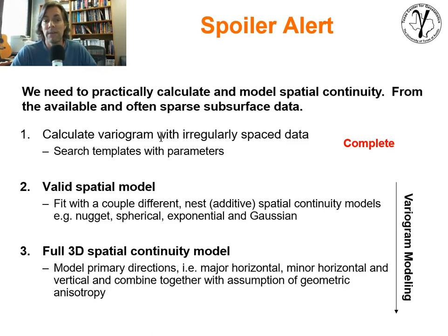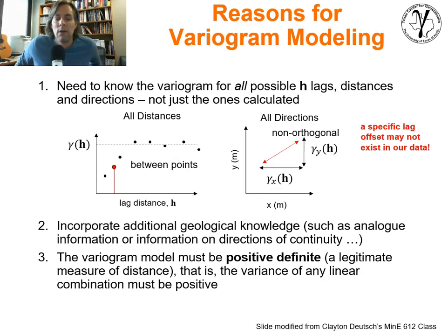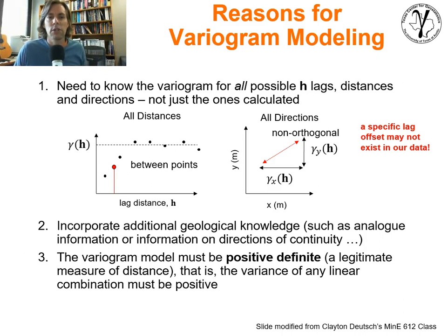We need to be able to build a systematic full three-dimensional or two-dimensional representation of spatial continuity. This is variogram modeling, and this is what this section is all about. So, reasons for variogram modeling — and notice the acknowledgement at the bottom of the slide. There are a couple slides here taken directly from Clayton Deutsch's graduate-level course at the University of Alberta. Appreciation to Clayton for allowing me to use course material.